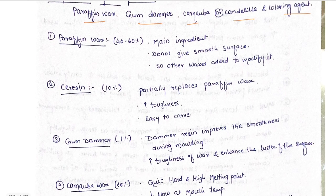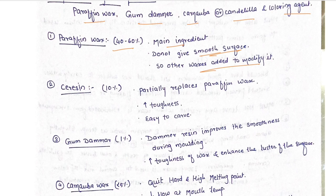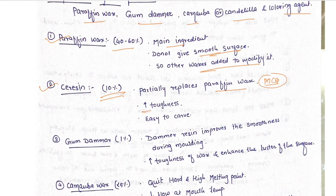Paraffin wax is 40 to 60%, it's the main ingredient, but does not give smooth surface, so we add other waxes to modify it. Sericin is 10%, partially replaces the paraffin wax. This can be asked in MCQs.